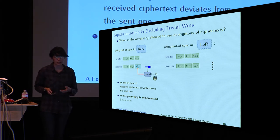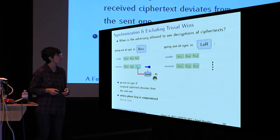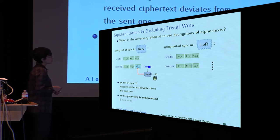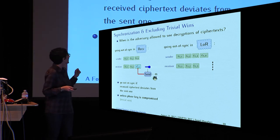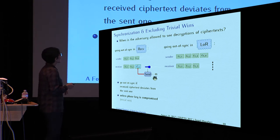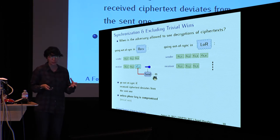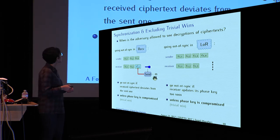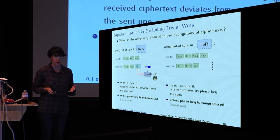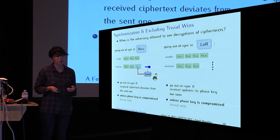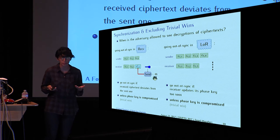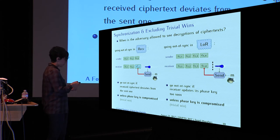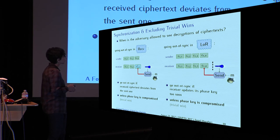Another example arises in the left-or-right oracle: three ciphertexts are sent and all three are received, the adversary does a key update on the receiver side, and then a fourth ciphertext is sent in the first phase. Intuitively, the receiver has proceeded to the next phase too soon and has no way of receiving this fourth ciphertext in the correct phase. However, again there is a catch — we should not go out of sync if the phase key in that phase is compromised, because if the adversary knows the key, she can receive the ciphertext before the key update and before the ciphertext was sent in the first phase.